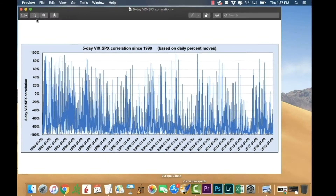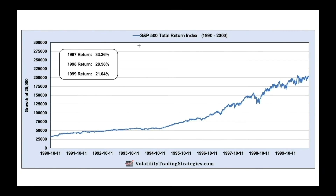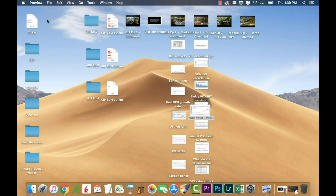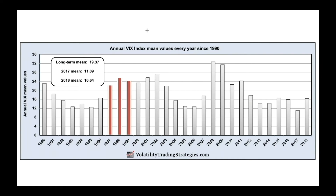One of the more pronounced examples I like to show is back in the late 90s during the dot-com boom, when pretty much everything was going straight up. You can see the performance: 1997 up 33%, 1998 up 28%, 1999 up 21% — very consistent, very strong performance. So if the VIX is the fear index and the S&P 500 is performing very well, most people would assume the VIX must have been very low during this period. But I've got a chart here showing annual VIX mean values, and the VIX was actually averaging around 24 during 1997 to 1999.